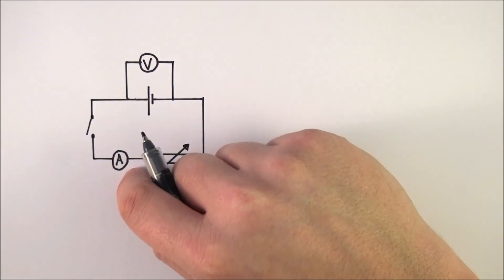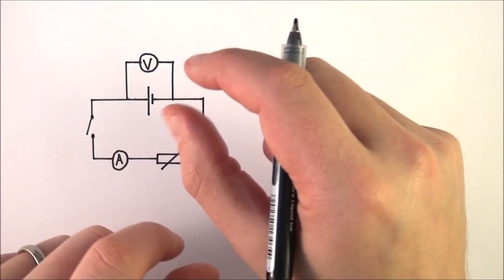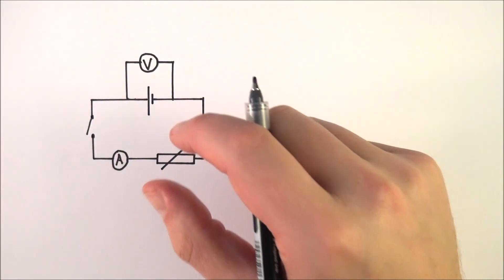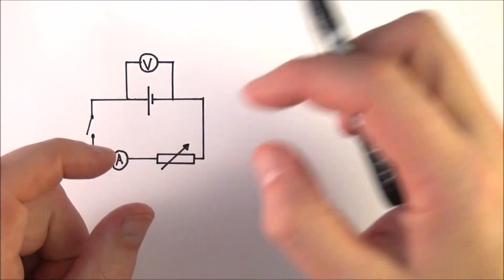We've got a voltmeter, an ammeter, a switch, and this thing here is a variable resistor. Sometimes you get a little box that you just twiddle the dial on. Sometimes you also get a thing which is basically a big coil of wire with a slider on top of it, and that's called a rheostat.